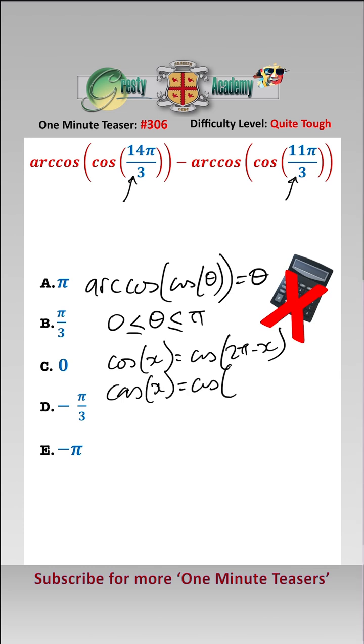So looking at 14 pi over 3 first, cos of 14 pi over 3 is equal to cos of 8 pi over 3 which is equal to cos of 2 pi over 3. That's using the second formula and now that's in the range.